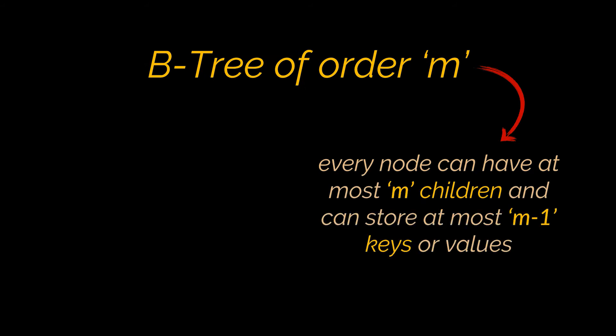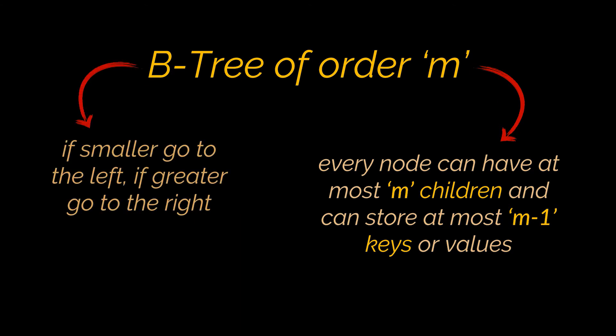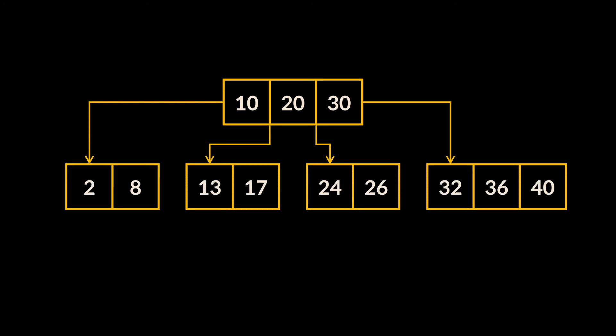B-trees are self-balancing trees. A B-tree of order m is a tree where every node can have at most m children and can store at most m minus one keys or values. Additionally, the smaller-greater property we discussed for binary search trees should be satisfied here as well. To dive further into these notions, take this B-tree of order 4 as an example.